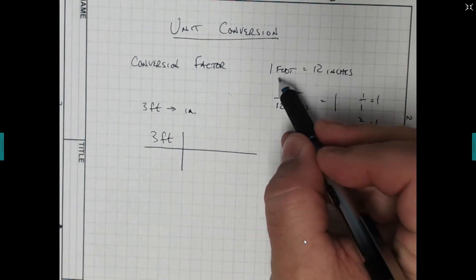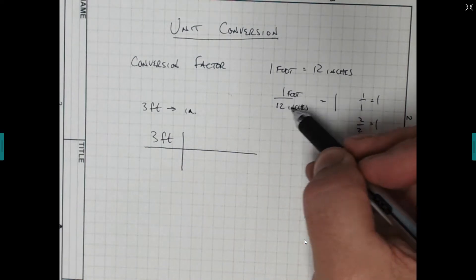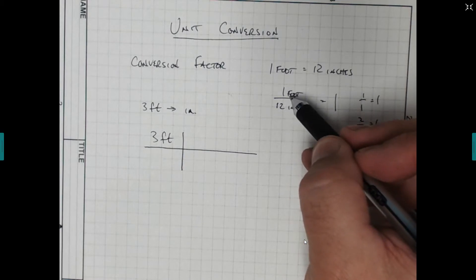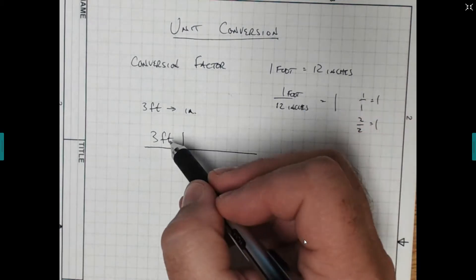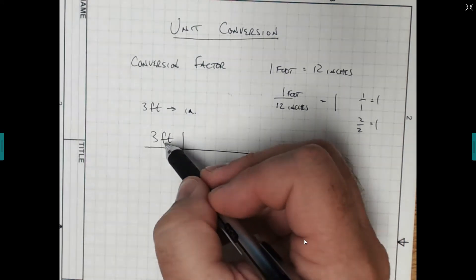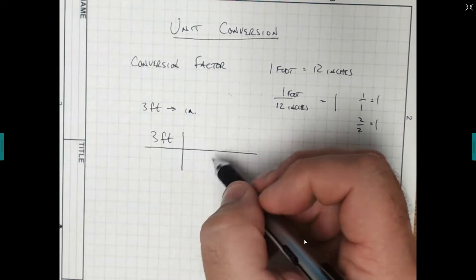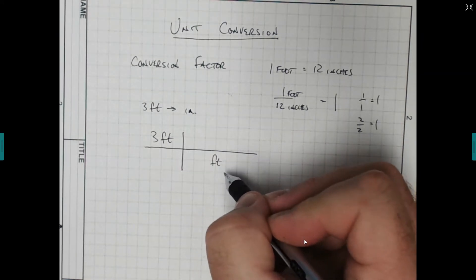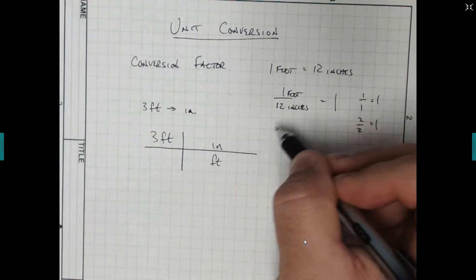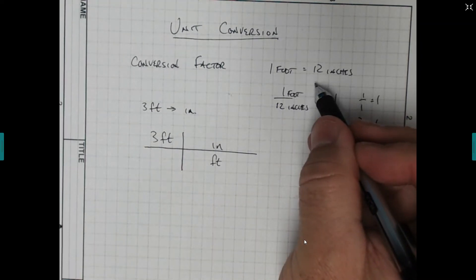And then we put in our conversion factor. Our conversion factor from our equality is 1 foot equals 12 inches. Now do we put the 12 inches on top or the 1 foot on top? The easiest way to do it is we want to put what we're getting rid of in the opposite corner. So we're trying to get rid of feet, so we're going to put feet down here. That means we're going to put inches on the top,